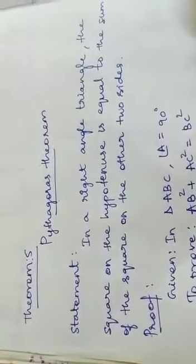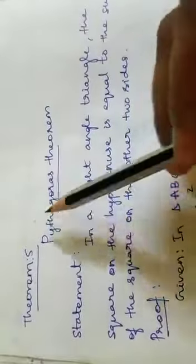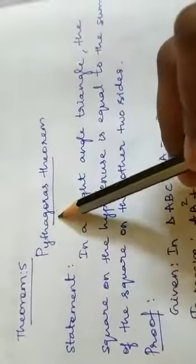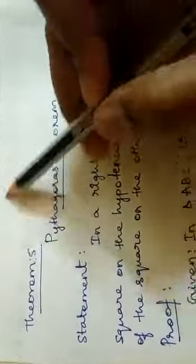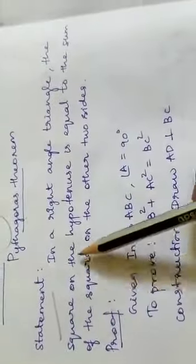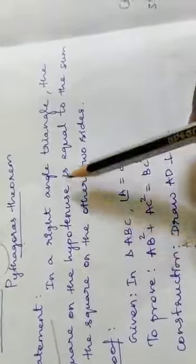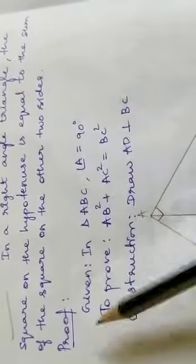Students, let us go to our next theorem of this chapter, which is a very important theorem — it is Pythagoras theorem. I am sure it will come in the board examination. Our statement is: in a right triangle, the square on the hypotenuse is equal to the sum of the squares on the other two sides.